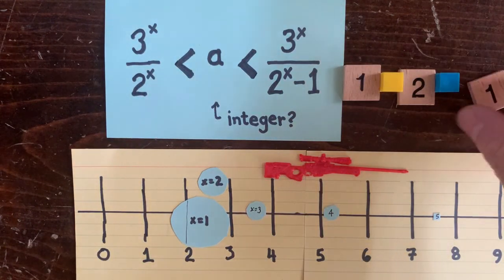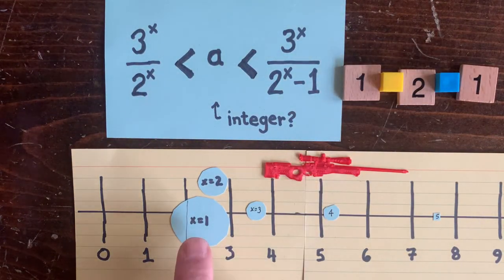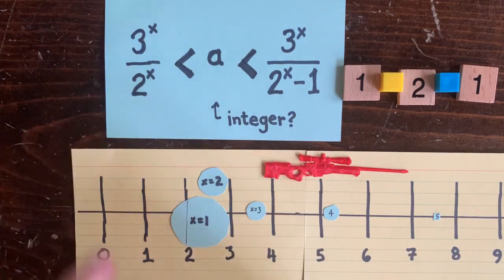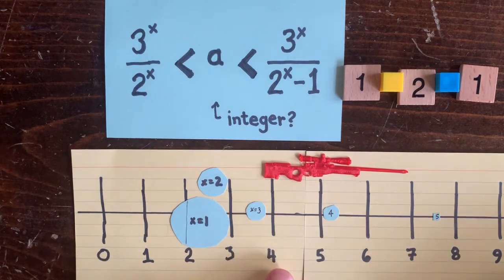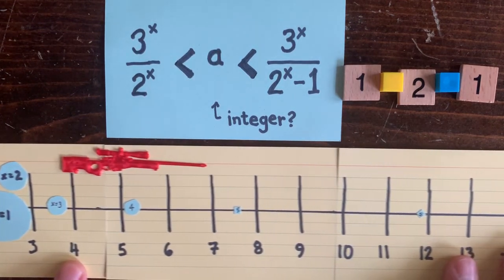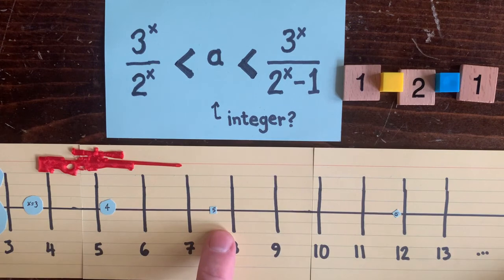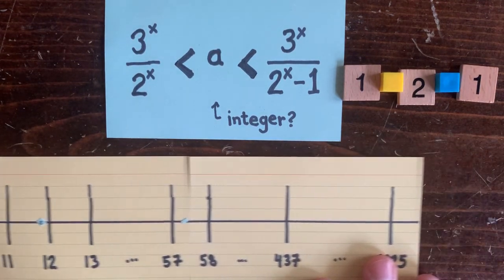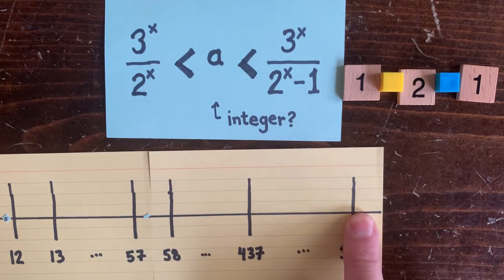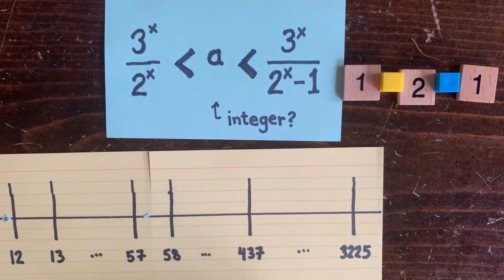But as x increases, the caliber of the bullet gets smaller and smaller. For x equals 2, we just graze an integer tick mark. For x equals 3, we miss. For x equals 4, we almost hit 5, but we miss. And for x equals 5, we miss again. By the time we get to x equals 20, the bullet we're shooting is microscopic. Very unlikely to hit an integer tick mark.